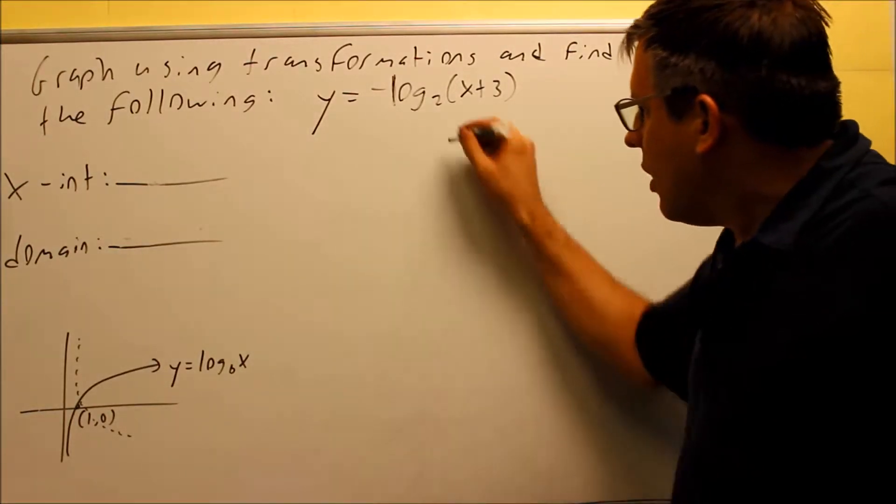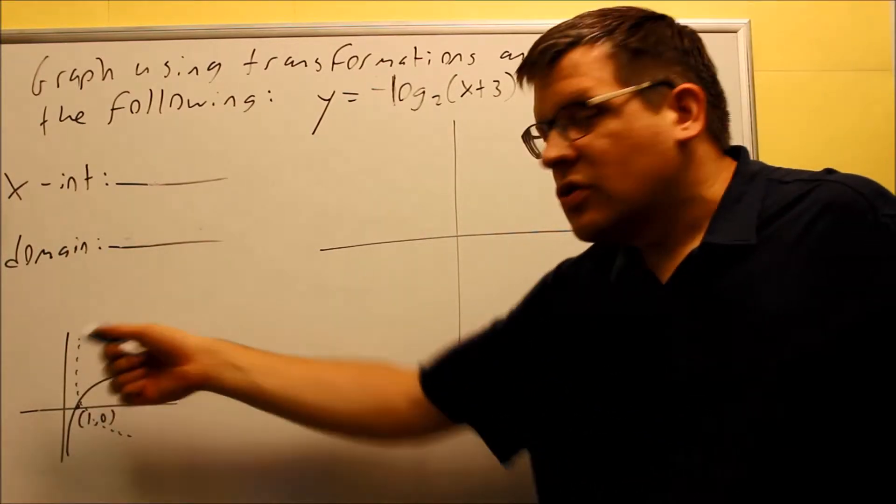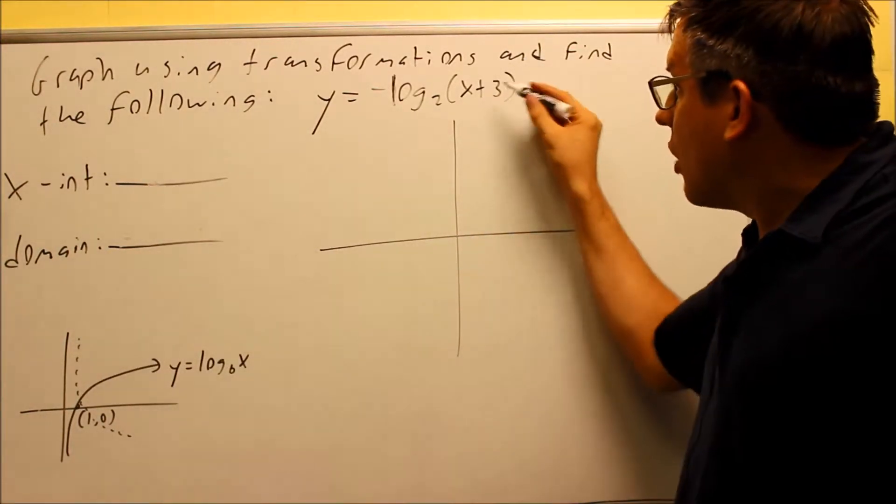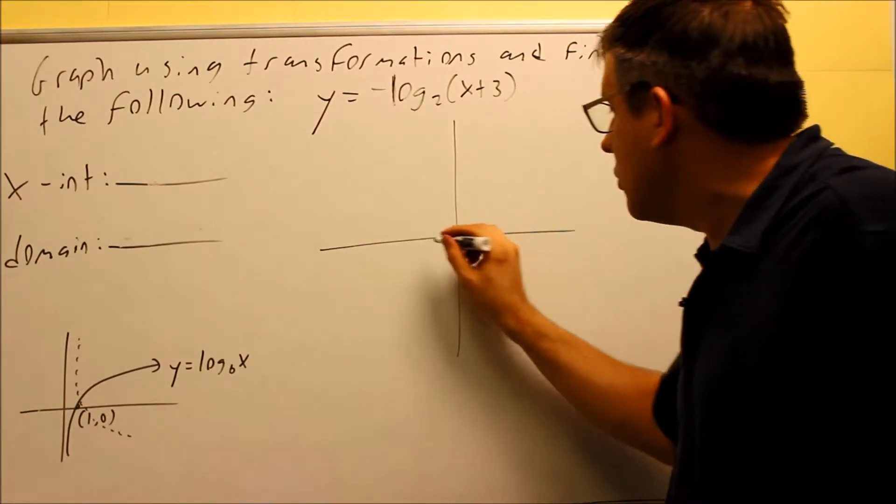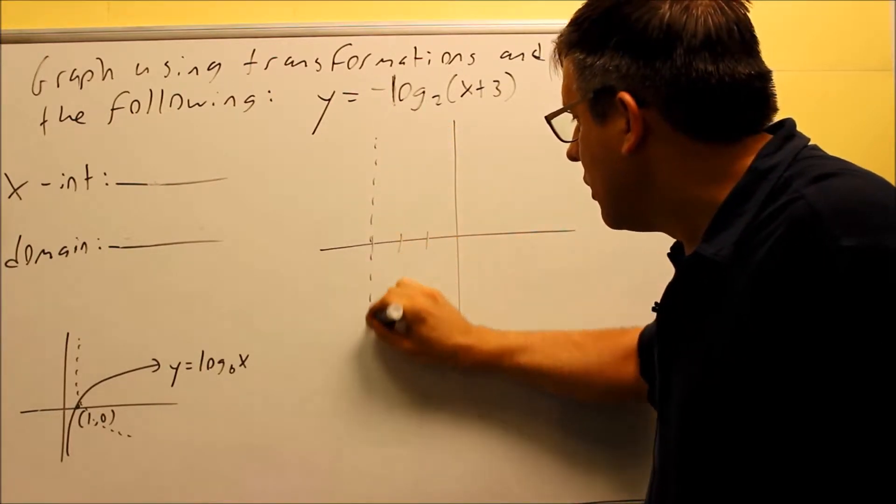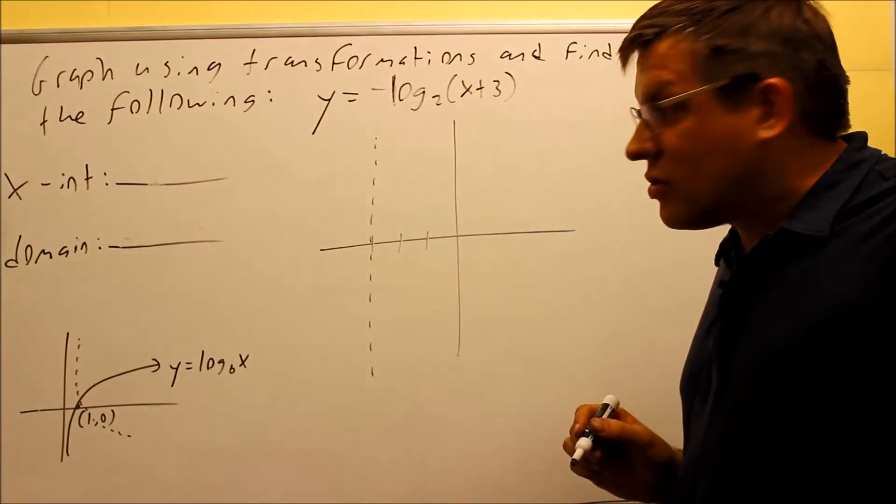The plus 3 means that we're going to take the vertical asymptote that's normally at 0, and we're going to move it three places to the left. Again, it's always the opposite direction of the sign you have here. Instead of plus, we'll move it three places to the left. So three places to the left. I'm going to draw my vertical line through there. That represents my vertical asymptote.